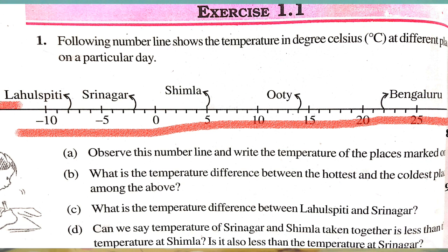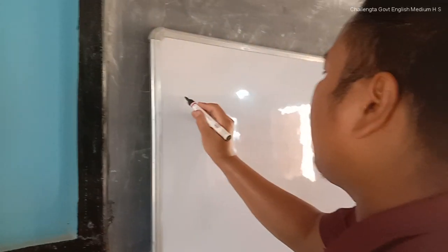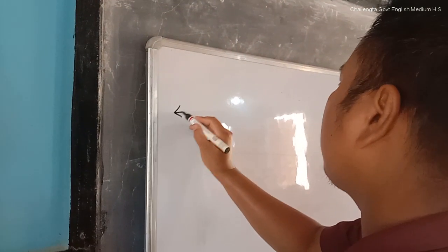It is very easy. We have Lahul Spiti, Srinagar, Shimla, Uti, and Bengaluru marked on this integer number line.